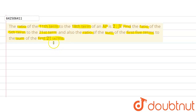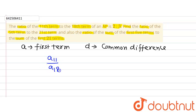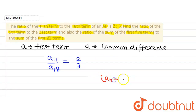Let us assume that A is the first term and D is the common difference of the AP. We are given the ratio of the 11th term to the 18th term, that is A11 divided by A18 is equal to 2 ratio 3. The formula for the Nth term of AP is: A_N = A + (N - 1) × D.